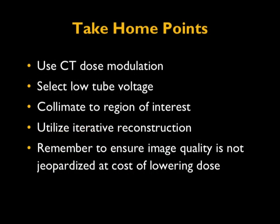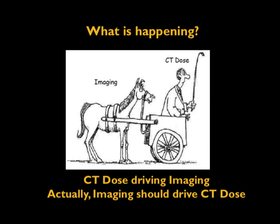Here are the take-home messages. Use CT dose modulation for pediatric CT imaging. Select low tube voltage less than 120 kV—100 or 80 kV is suitable for most pediatric CT. Collimate to the region of interest to minimize unnecessary radiation exposure. Utilize iterative reconstruction, but ensure image quality is not jeopardized at the cost of lowering the dose. Ultimately, the imaging should drive the CT dose—not the other way around.